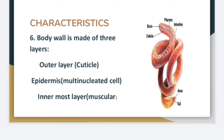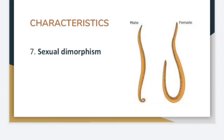One important characteristic of nematodes is that the number of cells in every system is fixed — whether it is the reproductive system or the excretory system, the cell numbers are fixed.